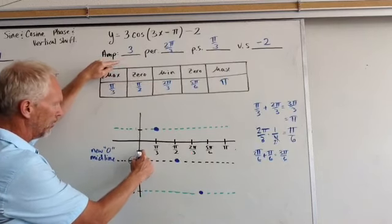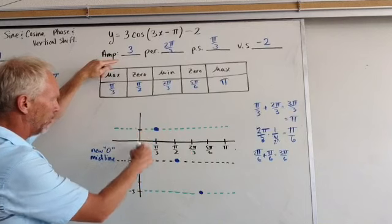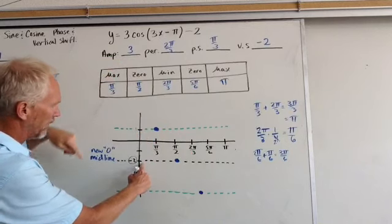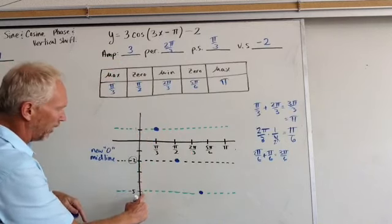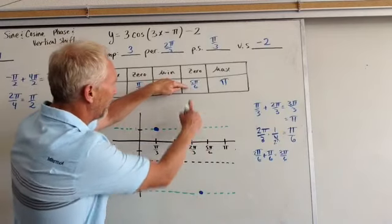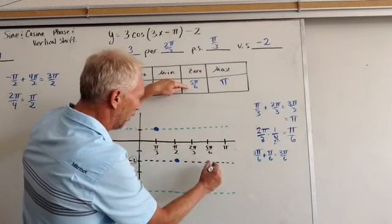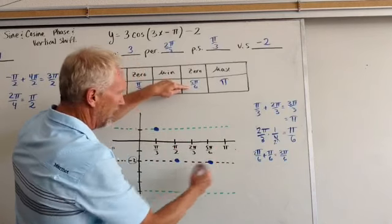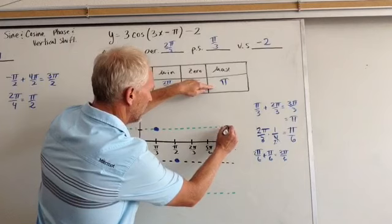My max is at 1 because I went up 3 units. Remember, start at negative 2. There's 1 unit, 2 units, 3 units, so I end up at 1. And 3 units down would be negative 3, negative 4, negative 5. So that's where my new minimum is. Then I go to 5 pi over 6, that's back up to a 0, my midline 0. And pi is at a max.